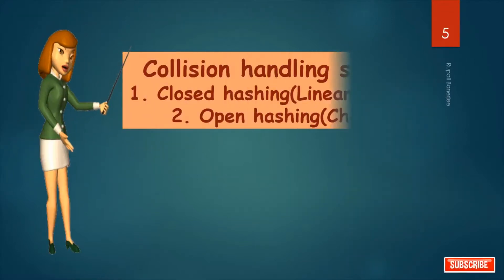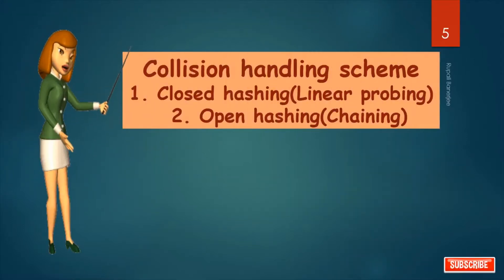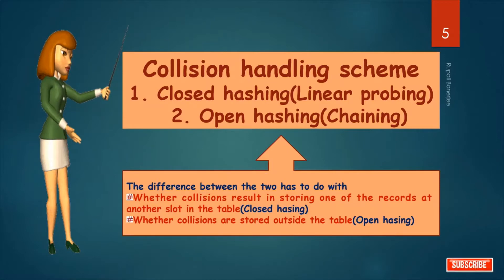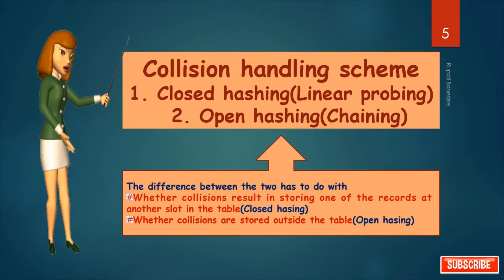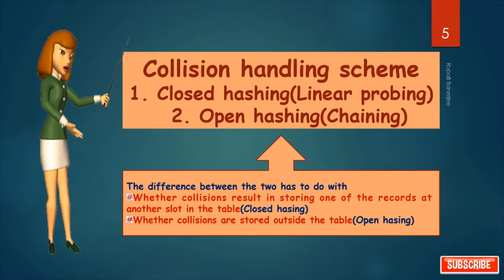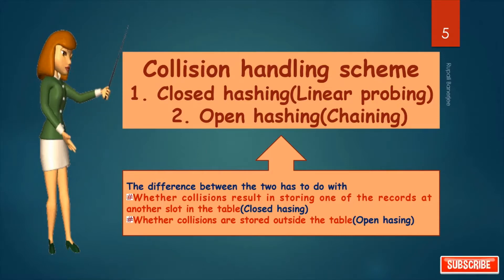Collision handling schemes: there are two types of collision resolution. One is open hashing, that is chaining, and another is closed hashing, that is linear probing. The difference between the two is whether collision results in storing one of the records at another slot in the same table — that is closed hashing — or whether the colliding record is stored outside the table — that is open hashing.